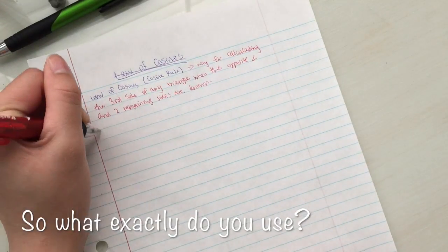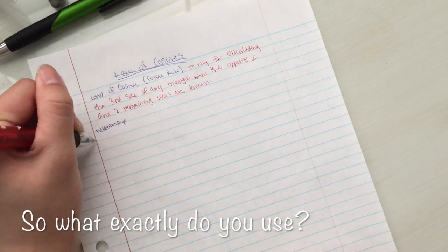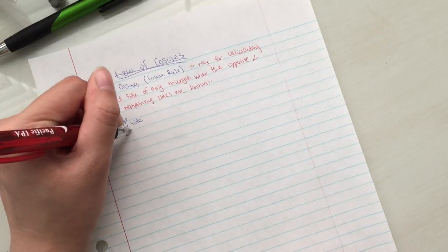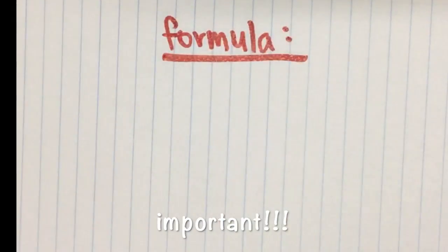So what exactly do you use? Well, the relationship between the side lengths and the angles is expressed in the formula c squared equals a squared plus b squared minus 2ab cosine of c.